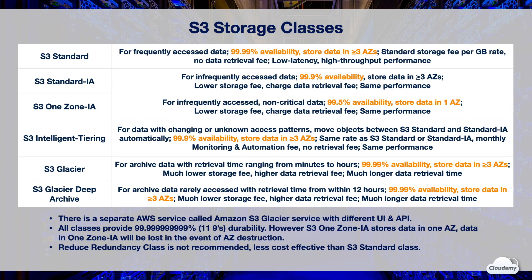S3 Standard IA is for data that is accessed less frequently but requires rapid access when needed. It's designed for 99.9% availability, with data stored across at least three availability zones. It's ideal for long-term storage, backups, and data stores for disaster recovery files. With S3 Standard IA you pay a lower per-gigabyte storage price than S3 Standard, however you do pay a data retrieval fee. It has the same performance as S3 Standard.